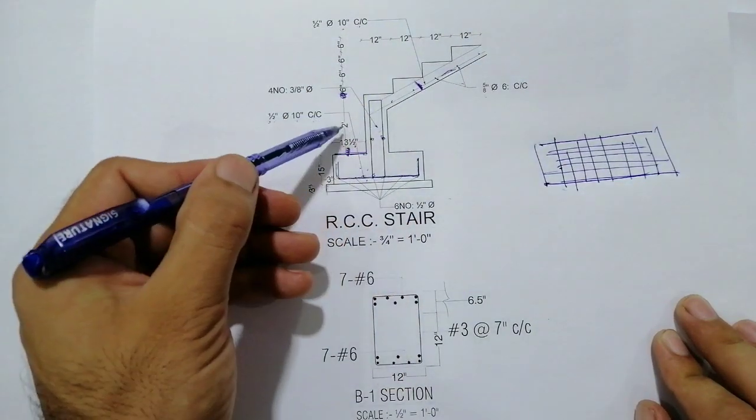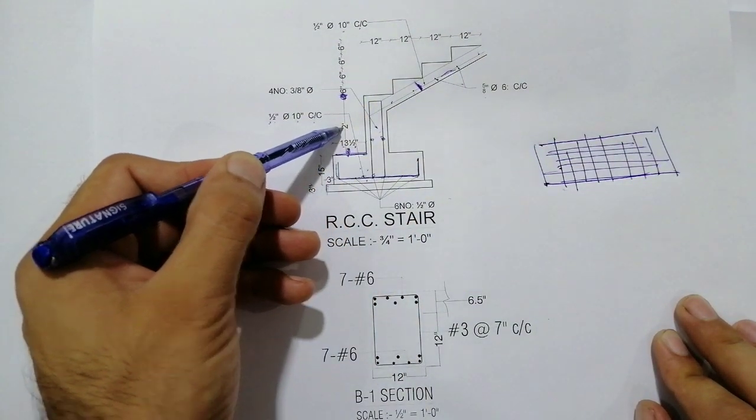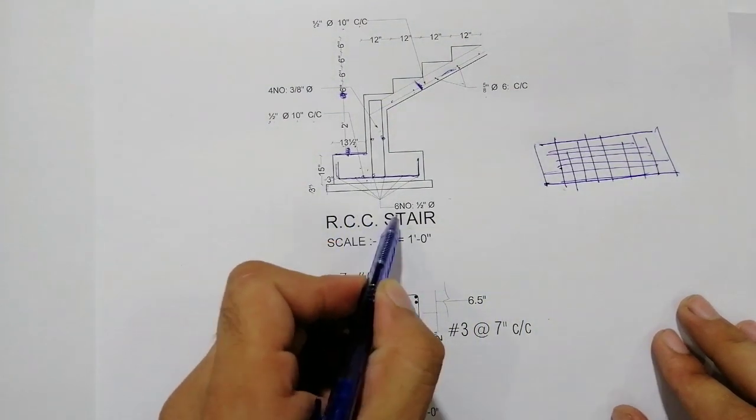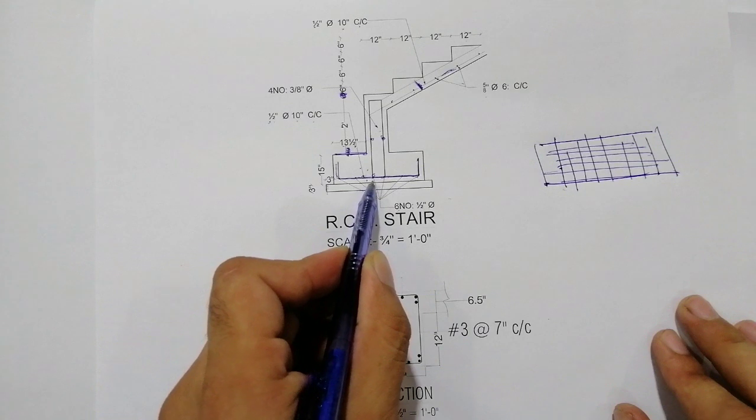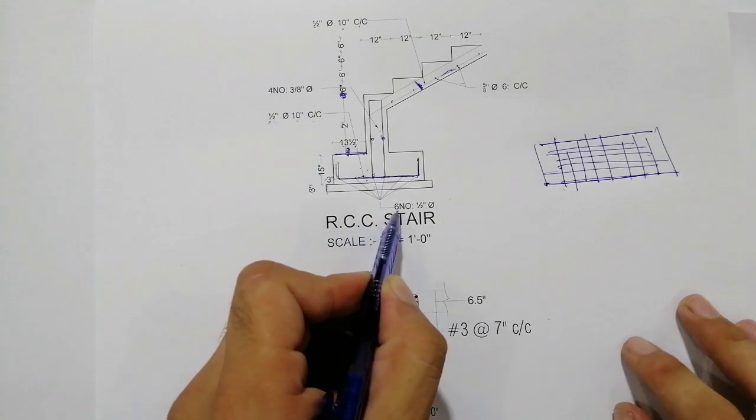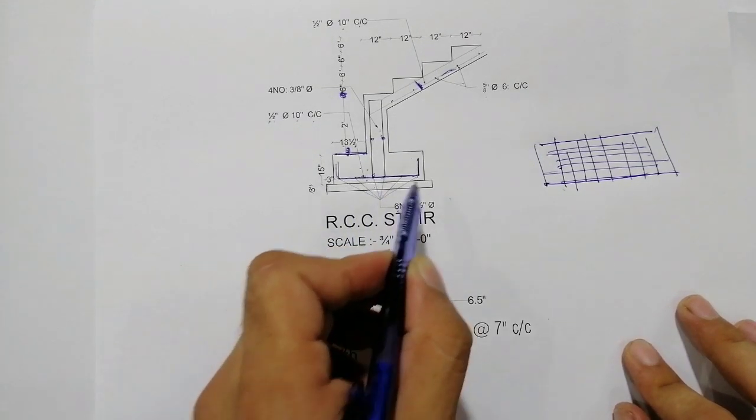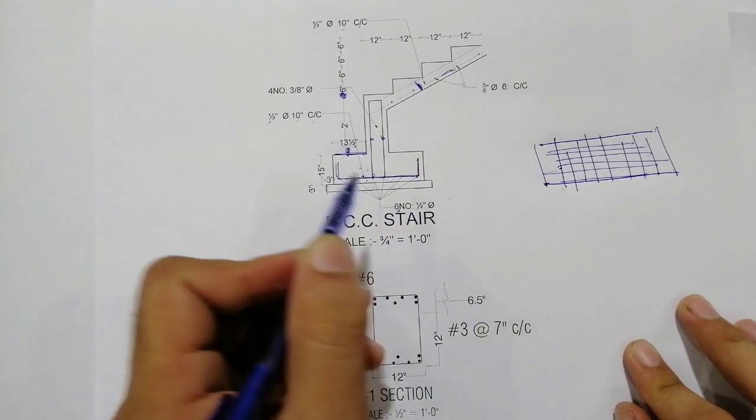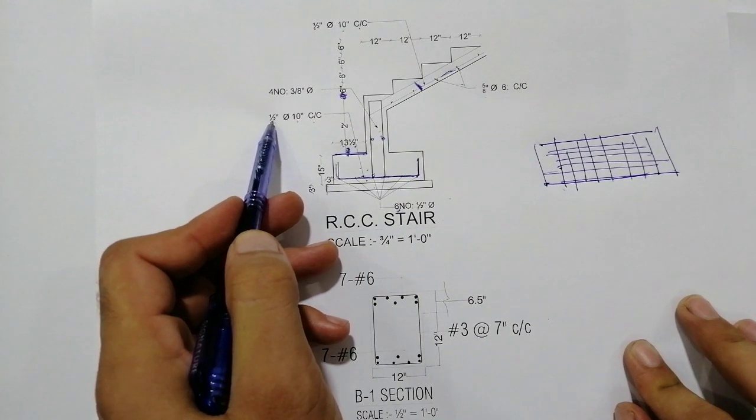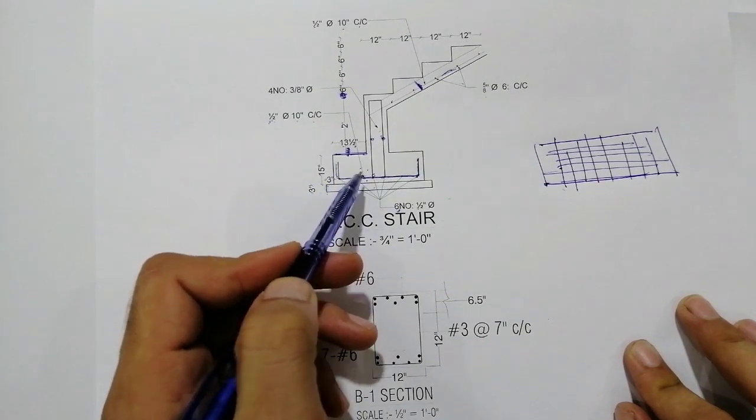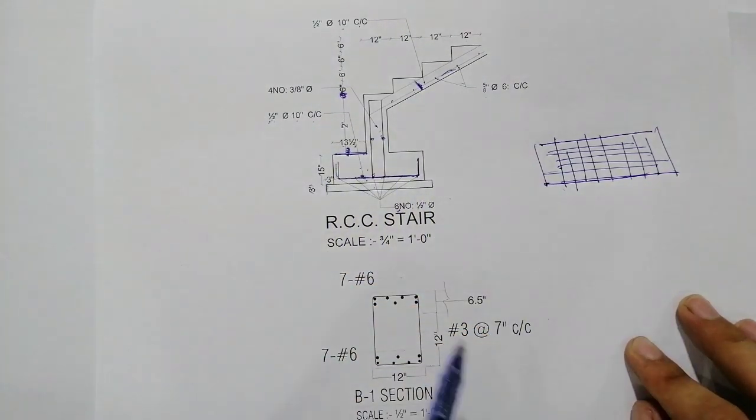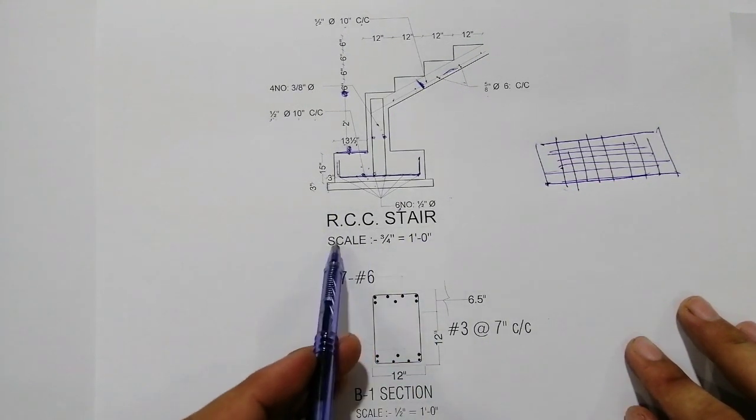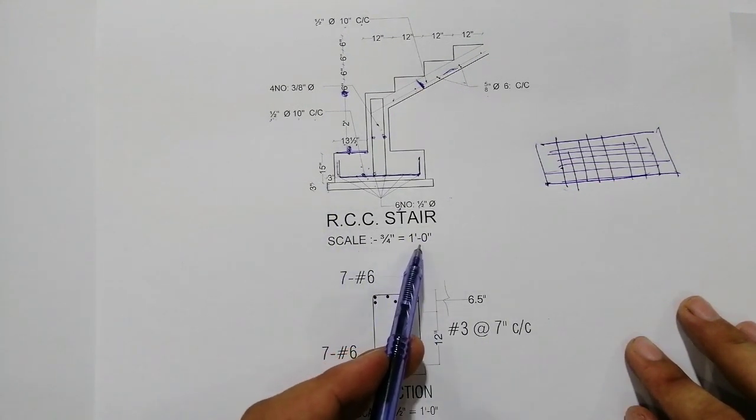These are also distribution bars - six numbers, which have a diameter of half inch. This is the main bar and distribution bars for the RCC staircase. The scale of the staircase is three by four inches equals one foot.